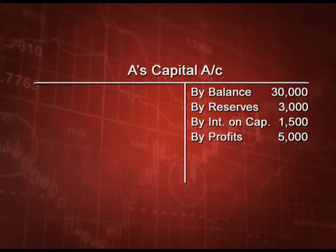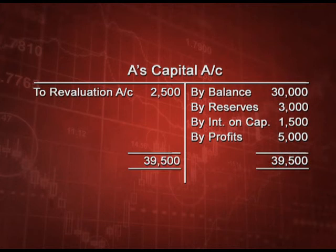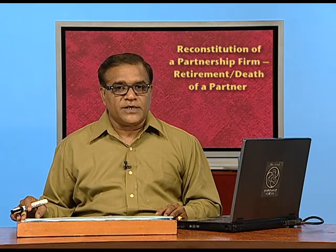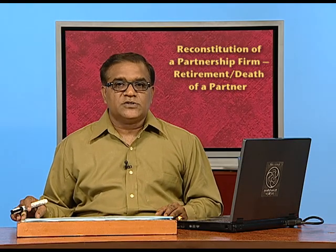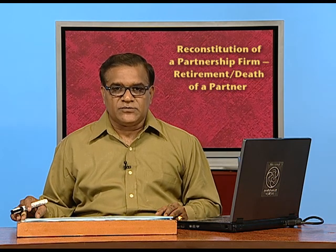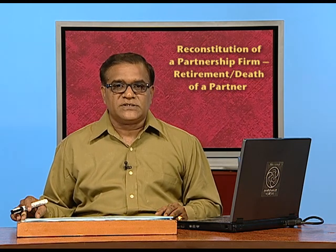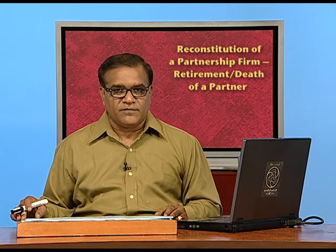On the debit side of A's capital account, revaluation loss of 2,500 is charged, and the net balance of 37,000 is transferred to A's executor account. In A's executor account, 37,000 is credited; half — 18,500 — is paid in cash, and the remaining 18,500 is transferred to A's loan account.